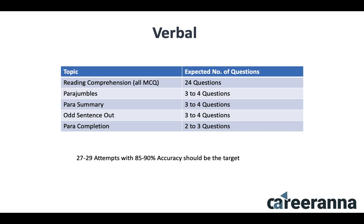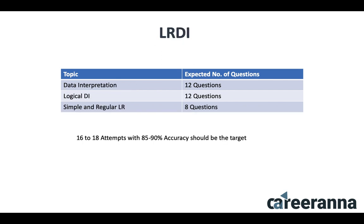All RC questions are going to be MCQ-based, and any non-MCQ question will be from the other four topics. For ideal attempts — 27 to 29 attempts with 85 to 90% accuracy should be your target for a 99+ score in the Verbal section.